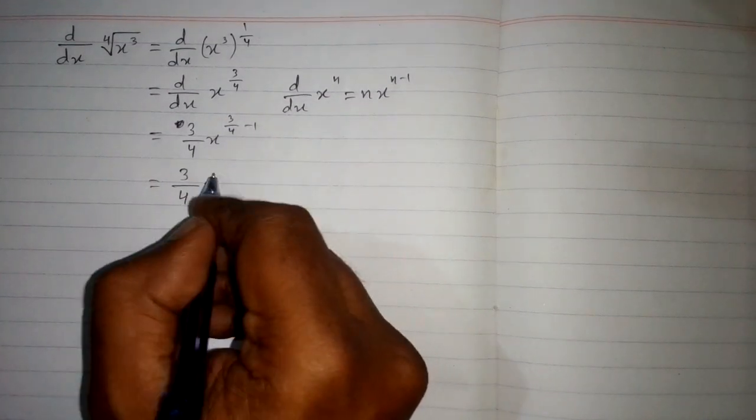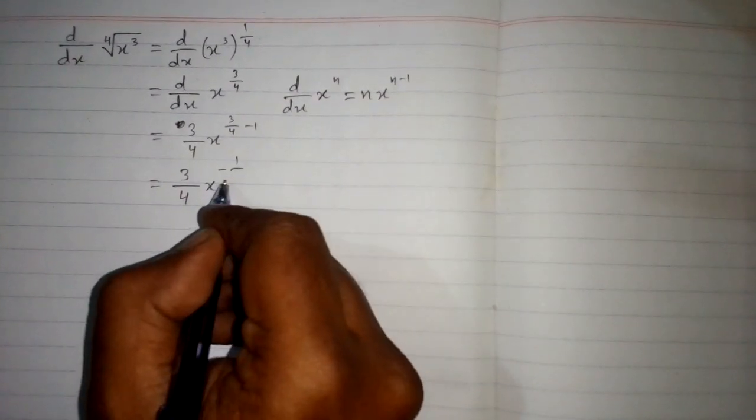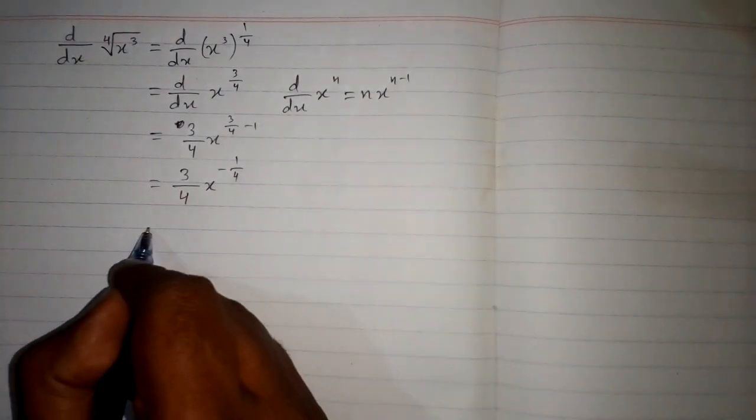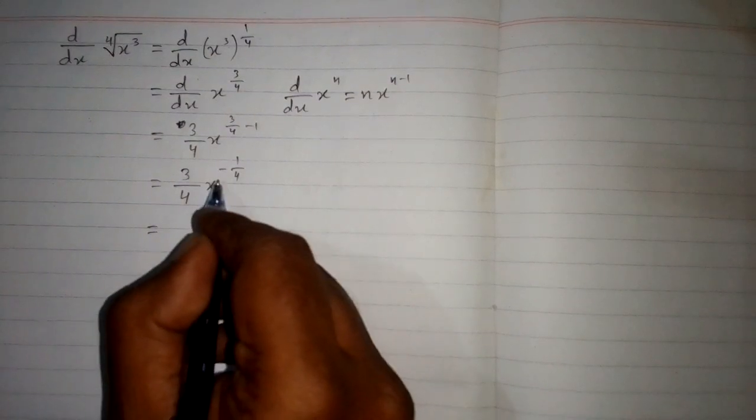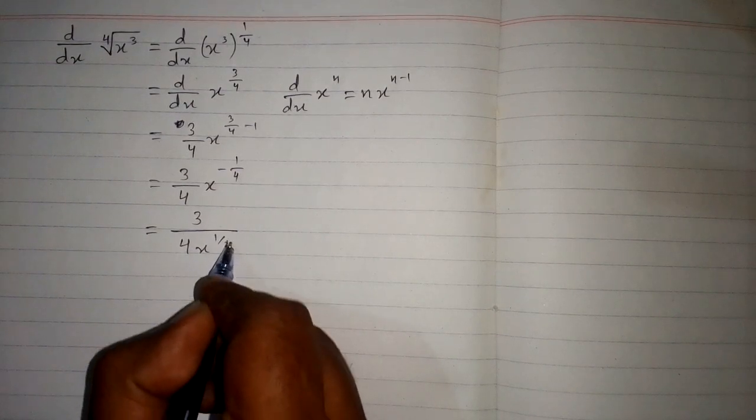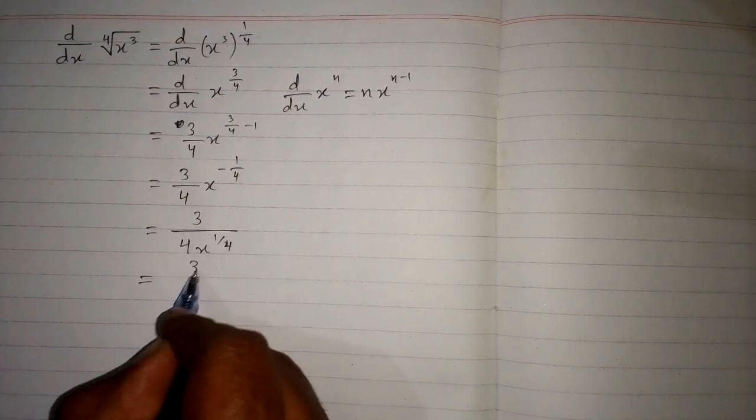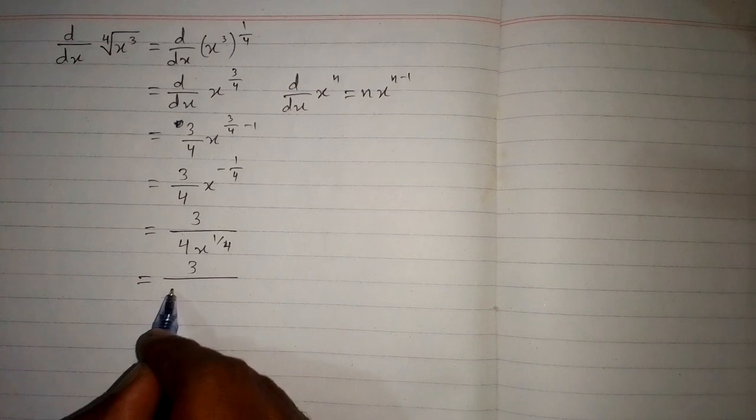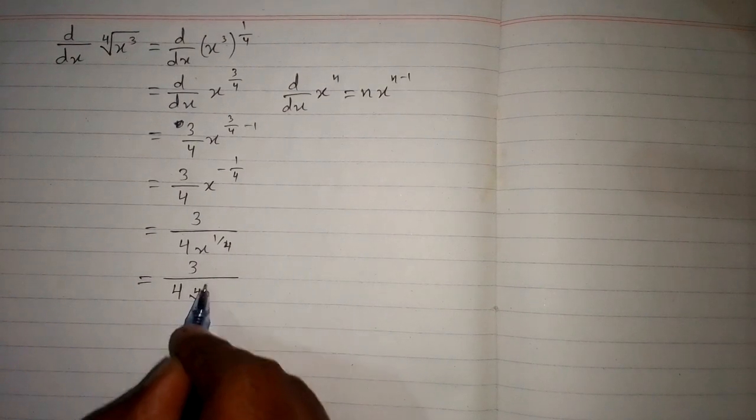3/4 minus 1 equals -1/4, so we have x^(-1/4). We can move x to the denominator, giving us 3/(4x^(1/4)). Since x^(1/4) is the 4th root of x, we can rewrite this.